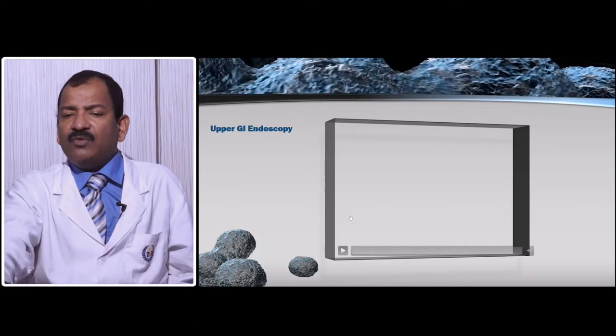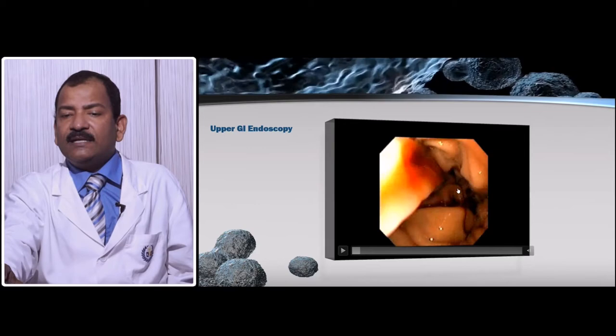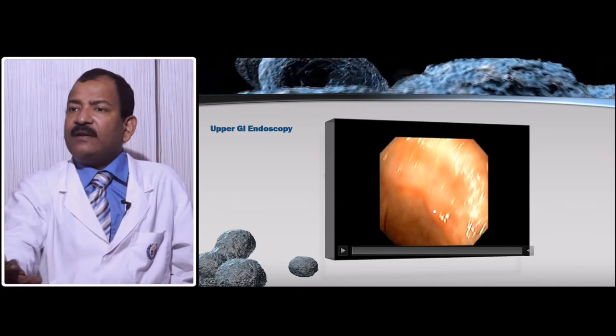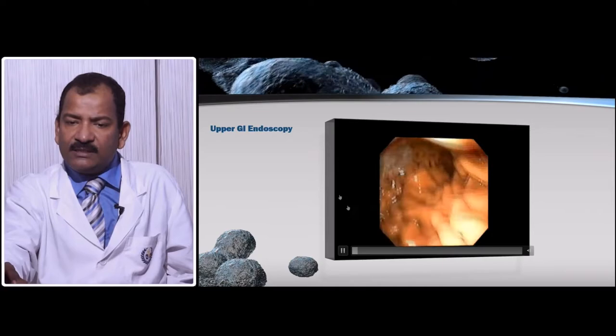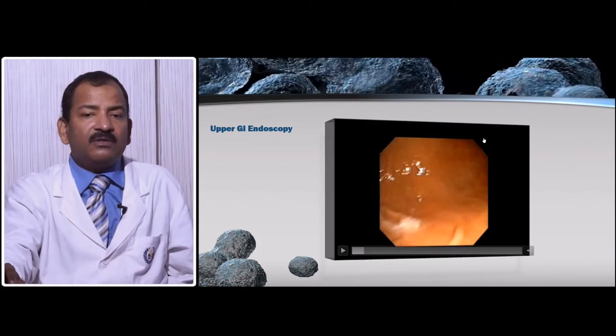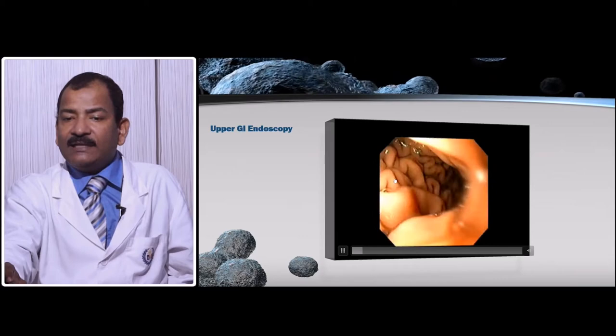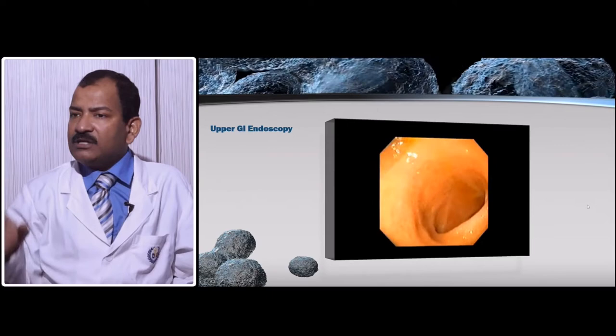We will now see some slides and videos of what it looks like once you enter the stomach — these are the rugae you will see. You then go to the antrum, where longitudinal folds are not present. In the stomach these folds are present, but as soon as they become absent, it is the antrum. After the antrum you will enter the pylorus and can go up to the second part of the duodenum.